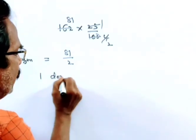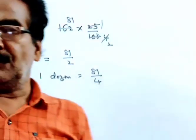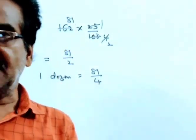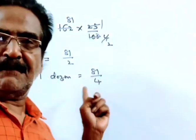2 dozen X is this much. So, 1 dozen, 1 dozen is 81 by 4. So, the reduced price of, friends, the reduced price of 1 dozen X is 81 by 4.